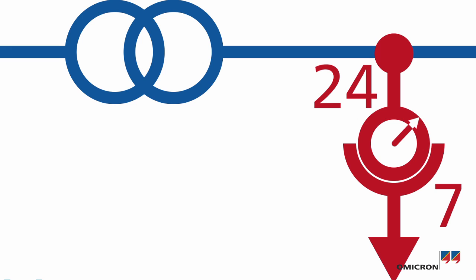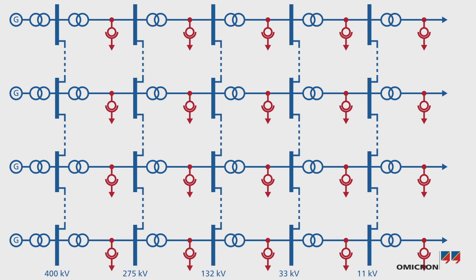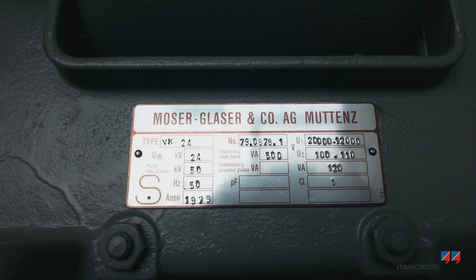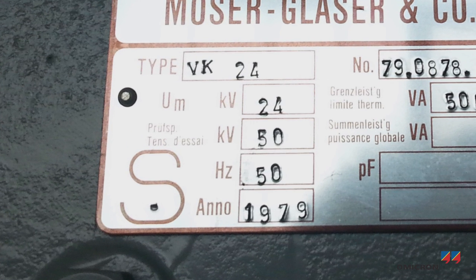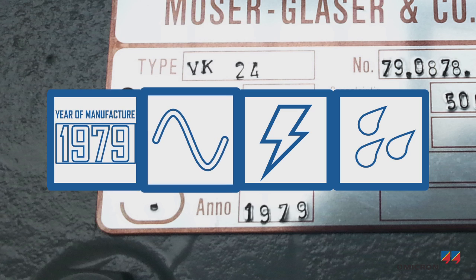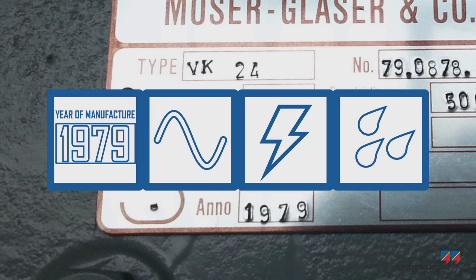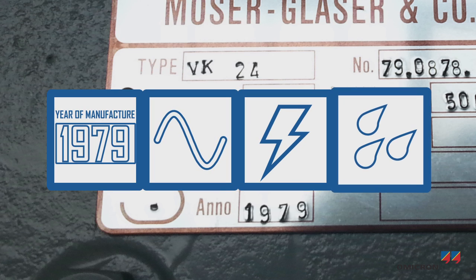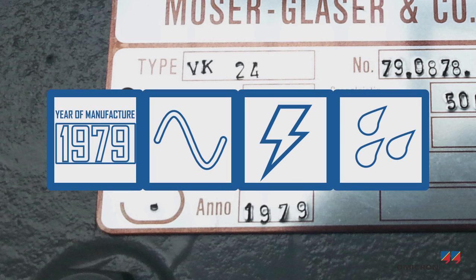They are used around the clock throughout the energy grid, and their lifespan can reach up to 40 years. During that time, the effects of aging, regular operation, network faults, or external influences may affect the integrity of a voltage transformer.